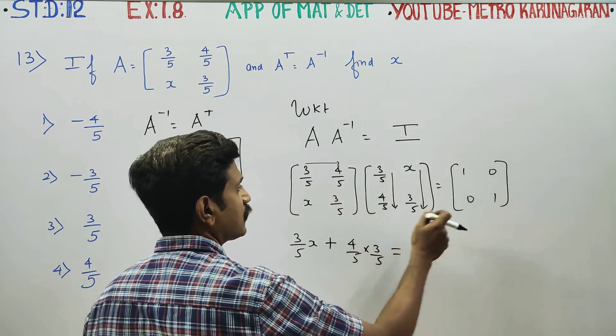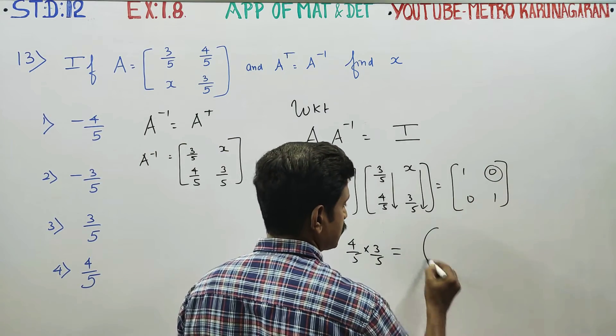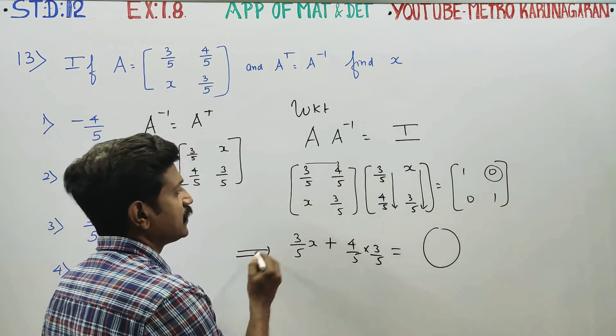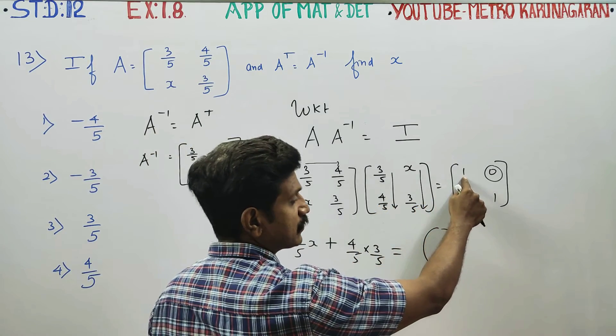This is first row second column. This answer is equal to 0. First row first column is equal to 0.